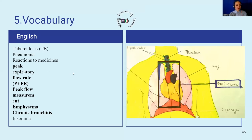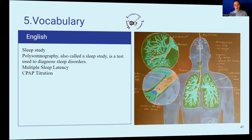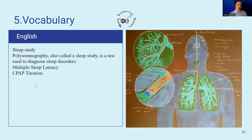The terminology covered includes: tuberculosis, pneumonia, reaction to medicine, peak expiratory flow rate, peak flow measurement, emphysema, chronic bronchitis, insomnia, sleep apnea, restless leg syndrome, lymph node, windpipe, trachea, esophagus, thoracentesis, pleural effusion, sleep study, polysomnography, multiple sleep latency, and CPAP titration.